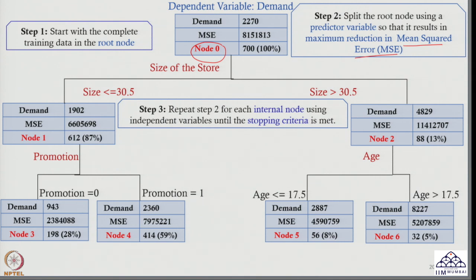In step 3, I repeat step 2 for every node — for each internal node using independent variables — until the stopping criteria is met. In this tree we have a total of 6 nodes. Node 0 was split using size of store with cutoff 30.5; node 1 was split using promotion, which is a categorical variable with values 0 and 1; node 2 was split using age with cutoff 17.5, giving us nodes 3, 4, 5, and 6.